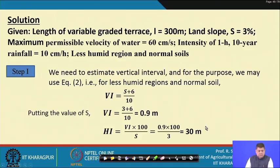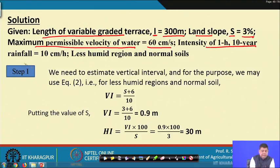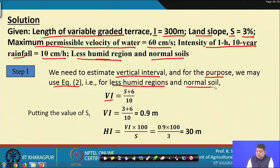The data given are: length of variable graded terrace l = 300 meters, land slope S = 3 percent, maximum permissible velocity (non-erosive velocity) = 60 centimeters per second, intensity of 1-hour, 10-year rainfall = 10 centimeters per hour, region is less humid with normal soils. First, we need to estimate the vertical interval.